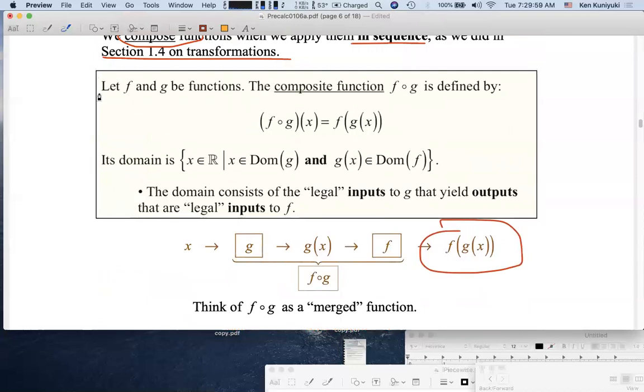So let f and g be functions. The composite function f circle g is defined by (f ∘ g)(x) equals f(g(x)).